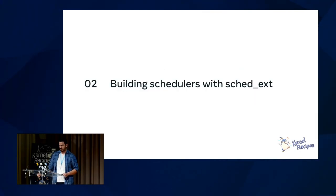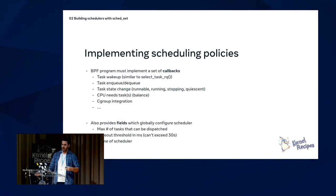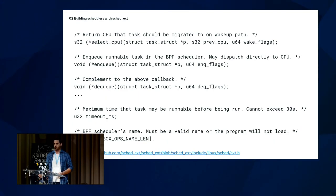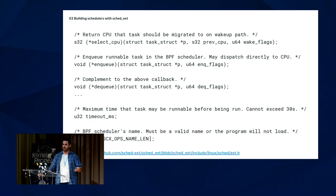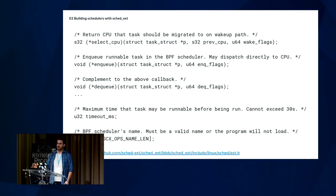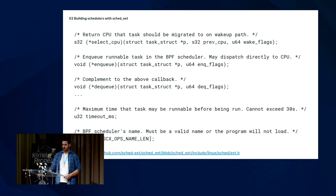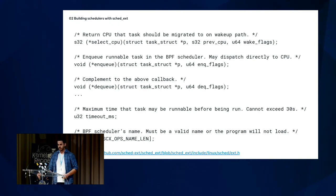Let's look at how to build a scheduler with sched_ext. You're implementing a set of callbacks and providing fields that configure the scheduler. Here are some of the callbacks: there's the select_cpu callback, invoked when a task wakes up, which lets the scheduler specify which CPU the task should be migrated to. A common pattern is to search for an idle CPU — this is constant time because we have a bitmap you can query — then migrate the task there, reserve the CPU, and enqueue it directly on that core. There's also enqueue, dequeue, cgroup integration, and more.